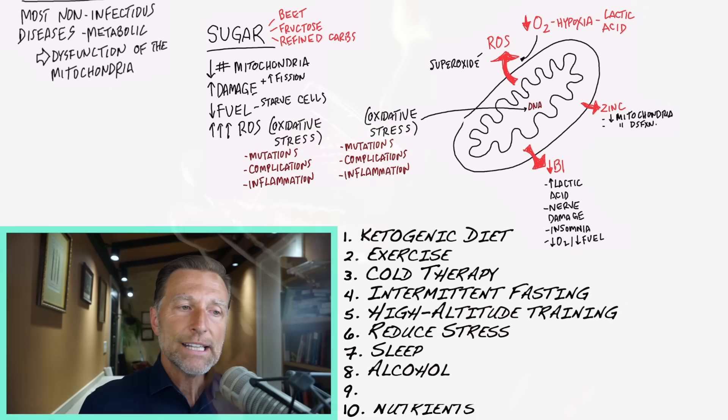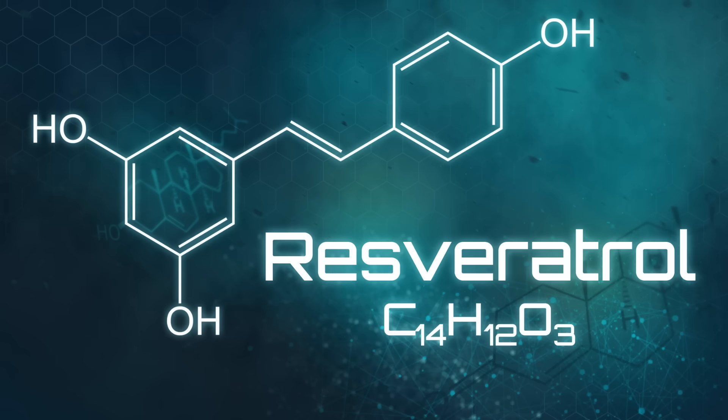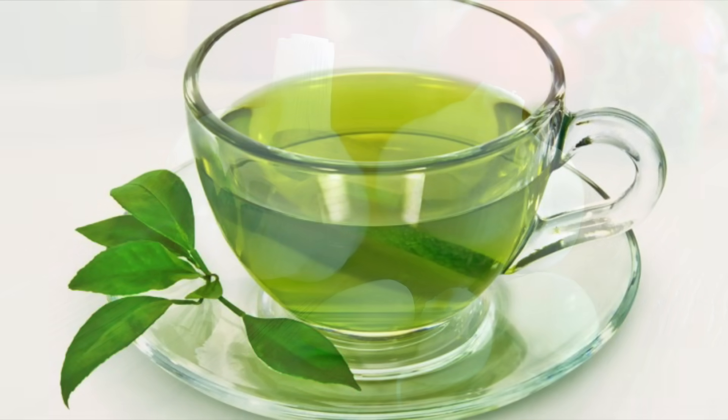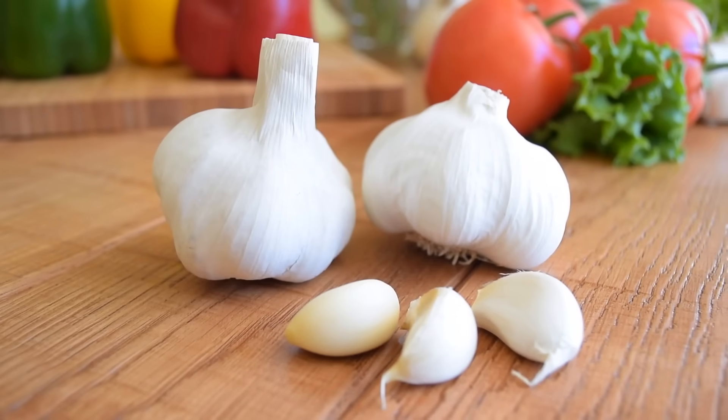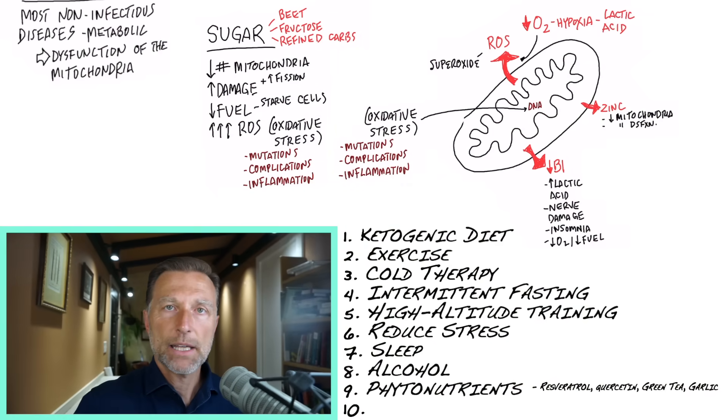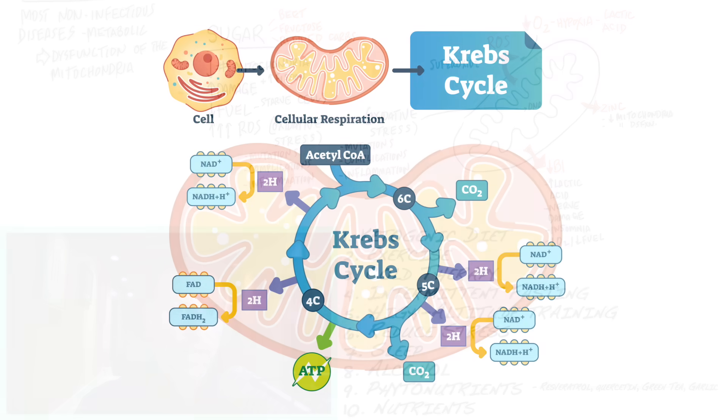But on the flip side, you can eat certain things that will increase mitochondria, like phytonutrients. There's a lot of different plant-based chemicals. Resveratrol, quercetin, the phytonutrients in green tea and garlic can all boost your mitochondria, not to mention the dependency on just basic nutrients that support the mitochondria.